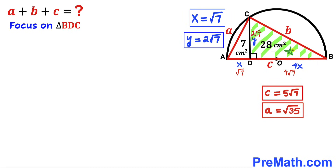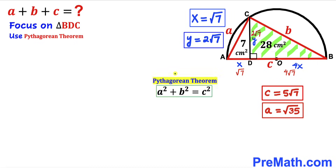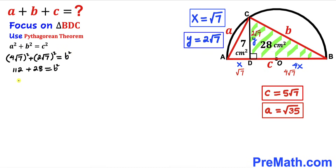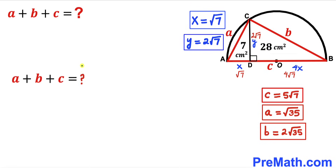Next, applying the Pythagorean theorem to right triangle BDC to find side BC, represented by lowercase b. The hypotenuse is b, and the two legs are 4√7 and 2√7. So b² = (4√7)² + (2√7)² = 112 + 28 = 140. Therefore b = 2√35.